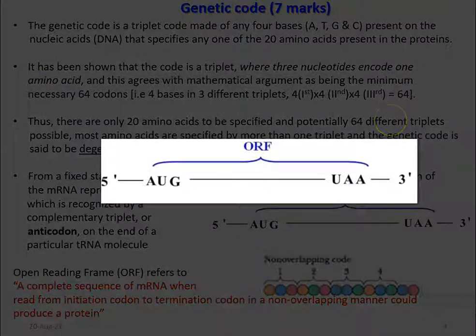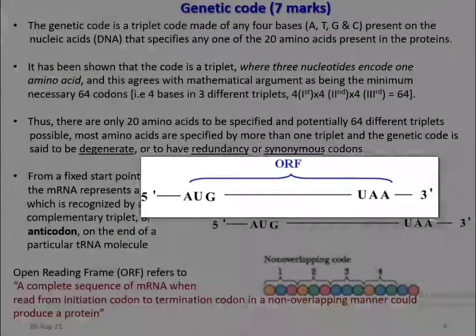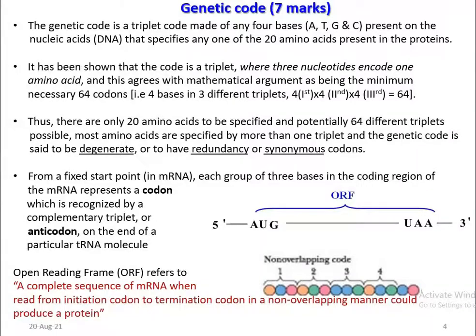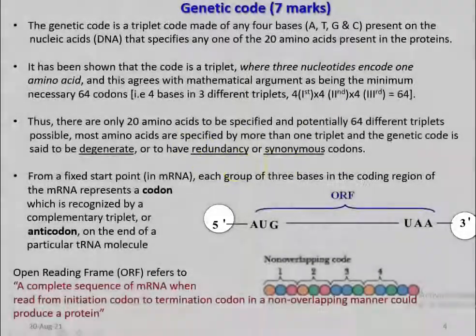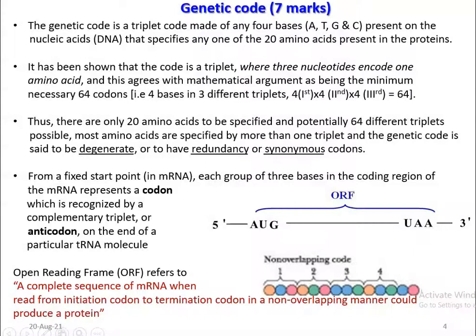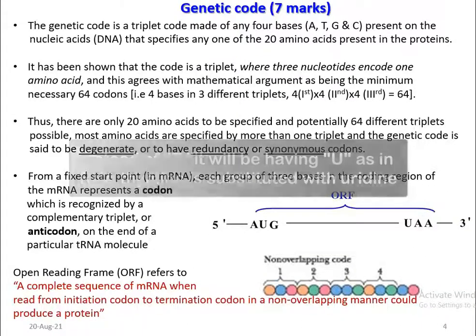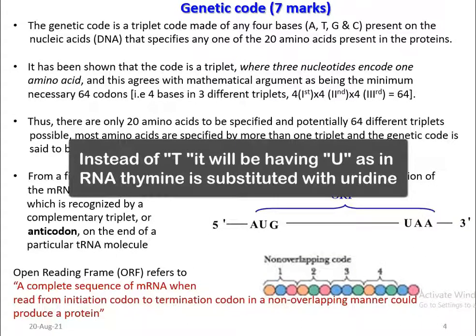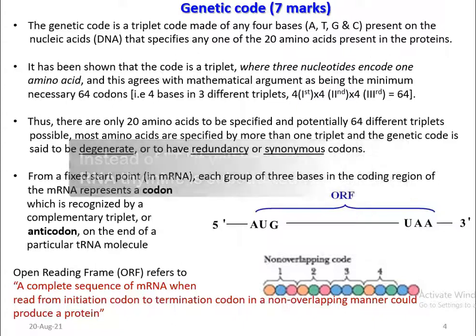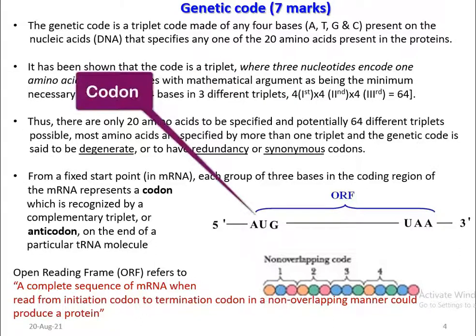Now you can see a stretch of an mRNA shown from the 5' to 3' end. This mRNA is made up of different bases: A, U, G and C — that is, instead of T, it will have U. The way in which the bases present in the mRNA are read is referred to as codons. For example, AUG is a codon.